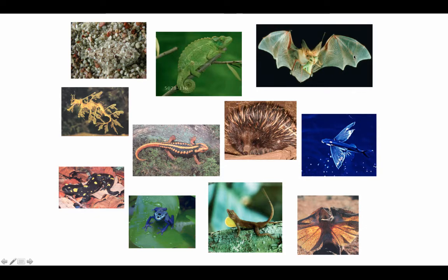Integumentary structures can even form locomotory structures. Here is the wing of a bat, composed primarily of skin stretched between elongated digits. And here is a flying fish that also uses skin to form wing-like structures from its fins to leap out of the water and glide significant distances over the surface. So there are lots and lots of things that we can do with this external covering of our bodies.